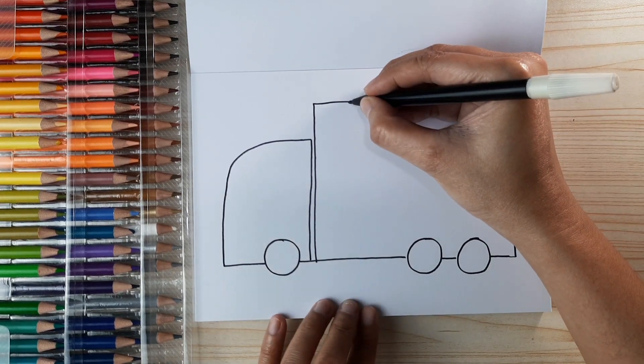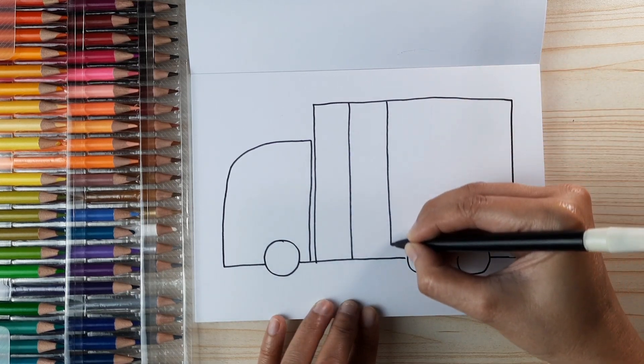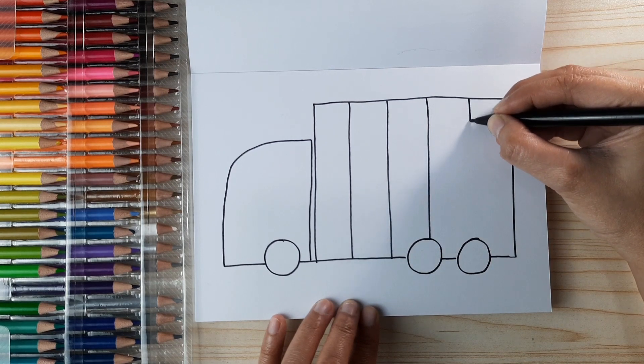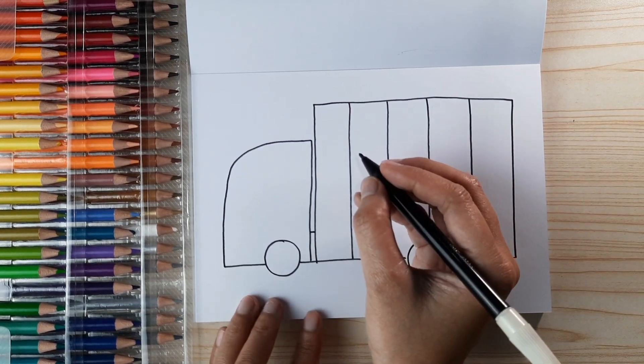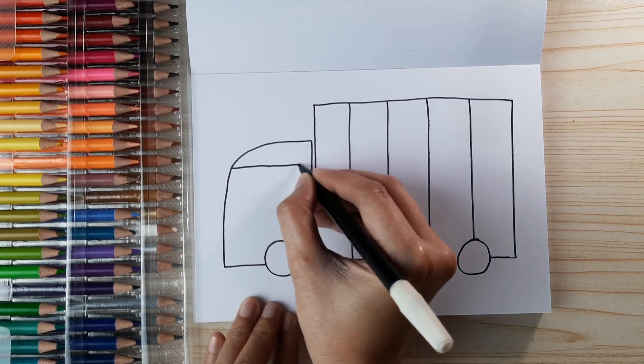Now let's draw the pattern or the accent of the container with straight lines like this. Just connect the head and the body of the container truck.